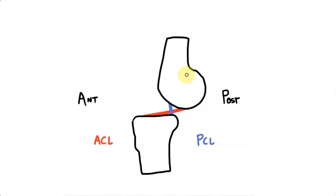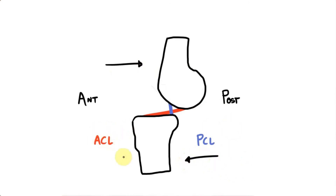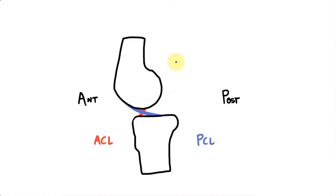We can also see that posterior displacement of the femur isn't the only way to damage the ACL. Anterior displacement of the tibia will also move those attachments apart, potentially damaging the ligament. The PCL resists the opposite movements and is normally damaged by anterior movement of the femur or posterior displacement of the tibia.